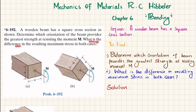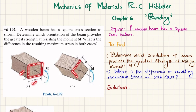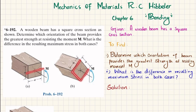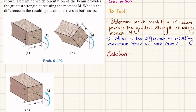What is the difference in the resulting maximum stress in both cases? You can see this is a square cross section having dimensions A by A, and this is also a square cross section A by A, but with a different orientation. Both are subjected to the same moment M. You have to determine which orientation provides the greatest strength and find the difference in maximum stress.